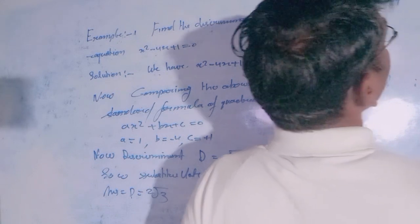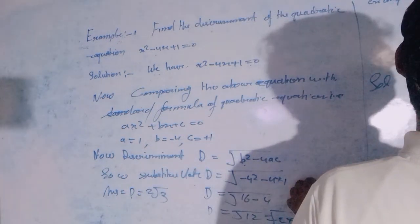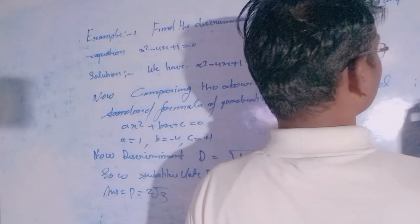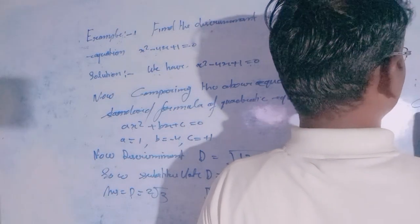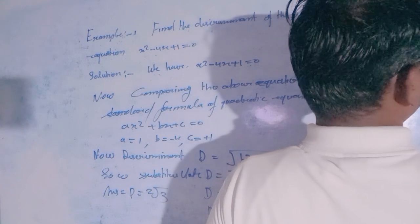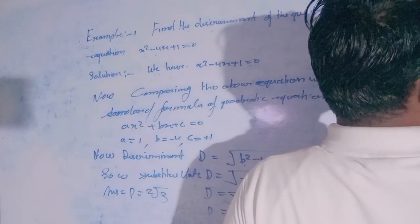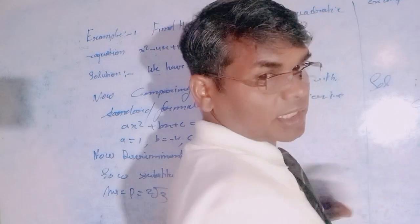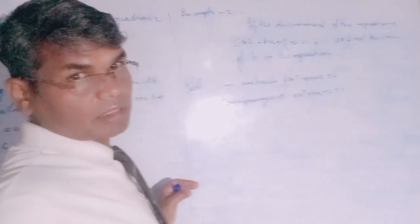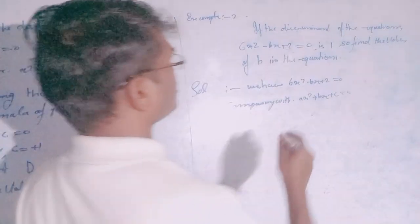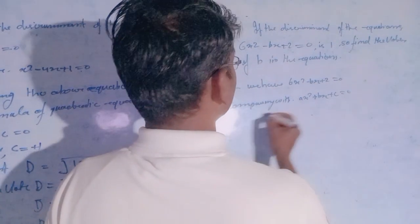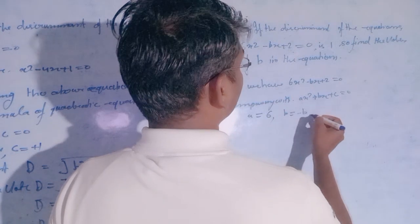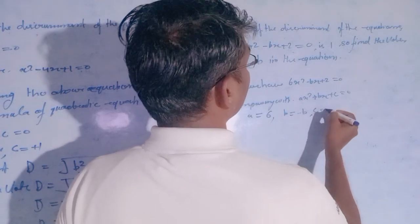We have the quadratic equation 6x squared minus Bx plus 2 equals 0. Comparing with the standard form a x squared plus b x plus c equals 0, we find: A is equal to 6, B is equal to minus B, and C is equal to plus 2.